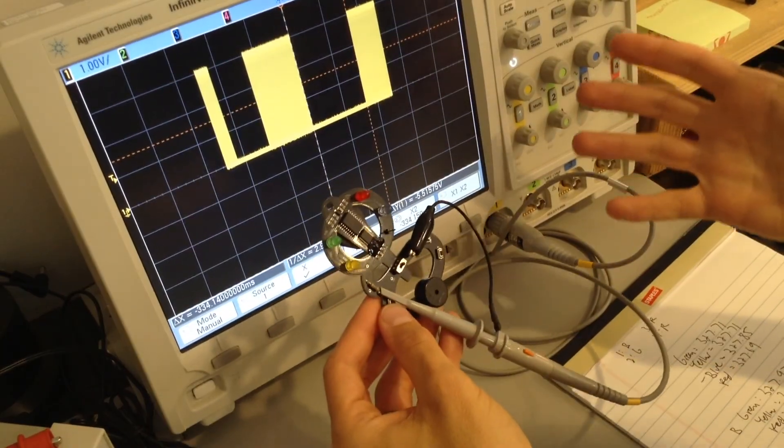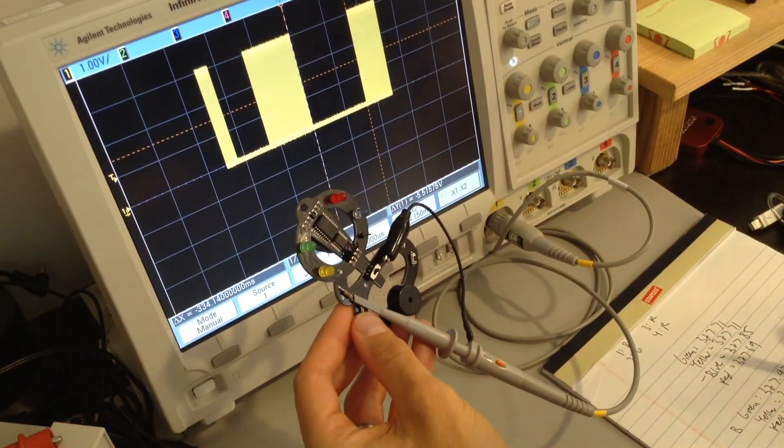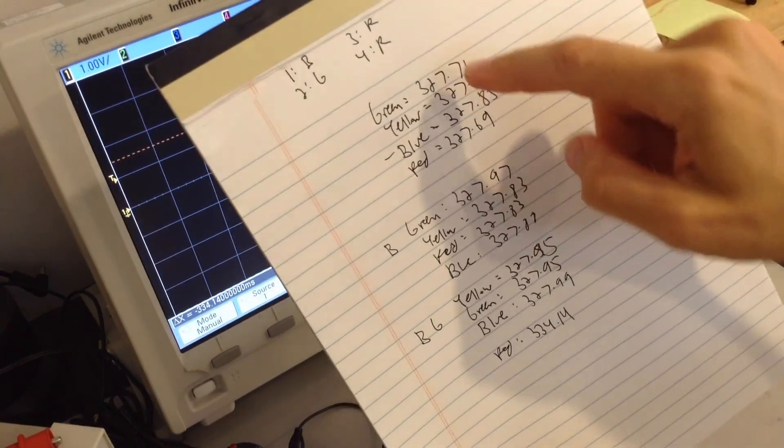All right, so we did it again, got lucky just like last time where the last two digits were the same. So the final code, blue, green, red, red, and here are some of my notes of measuring the timings as we're trying all the different combinations.